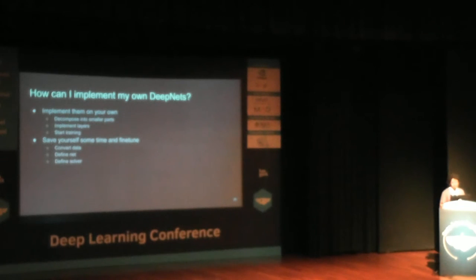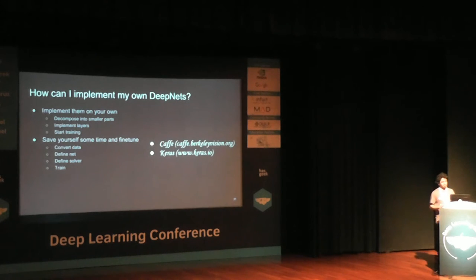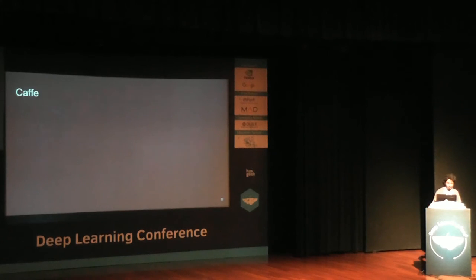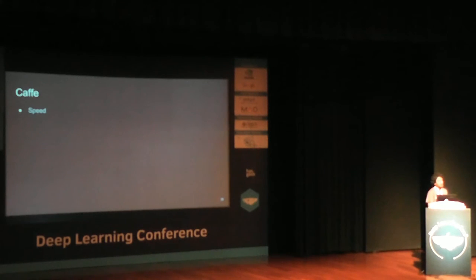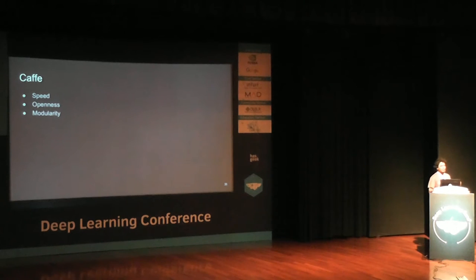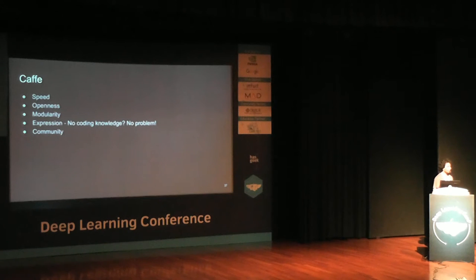I'm going to talk about CAFFE, developed by Berkeley Vision, and Keras, which is a Python library. Why should we use CAFFE? It's very fast, open source, and modular. If you don't know coding, it's expression-based, so even without coding you can implement networks very easily. It's developed by a community, which is the best part, so there's always something new implemented in CAFFE.